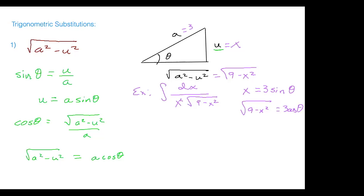One thing that isn't immediately obvious is what dx equals. We've set up u and √(a²-u²), but there's a dx in our integral. You can differentiate x = 3 sin θ to get dx = 3 cos θ dθ.